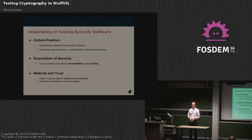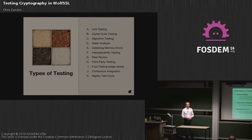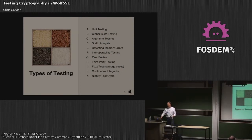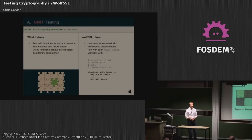Being open source is very helpful — any of you can pull up our GitHub account and look at our code base. Universities and security teams can look at us as well. SSL provides data integrity, confidentiality, and authentication, and we try to test all of those different pieces. The types of testing we'll cover today include: unit testing, cipher suite testing, algorithm testing, static analysis, detecting memory errors, interop testing with other implementations, peer review, third-party testing, fuzz testing, CI, and our nightly test cycle.